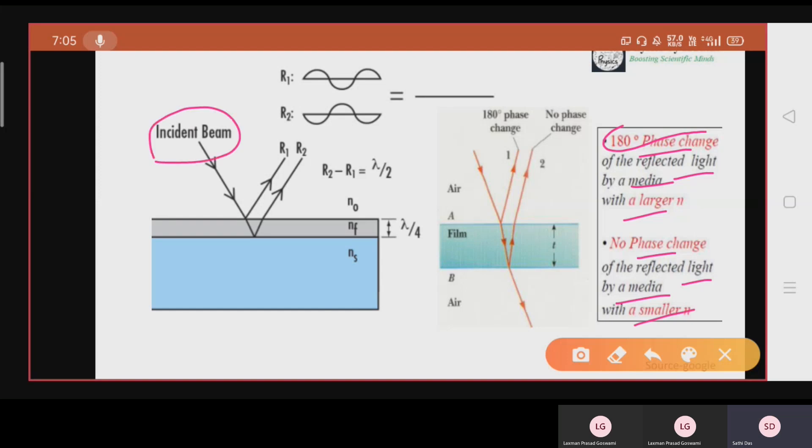Suppose this is our incident beam and it will reflect. This is our thin film of some coating, some material coating. The incident beam will get reflected from this interface, from this boundary and from the second boundary. This boundary is the air medium interface and this boundary is the medium glass interface.